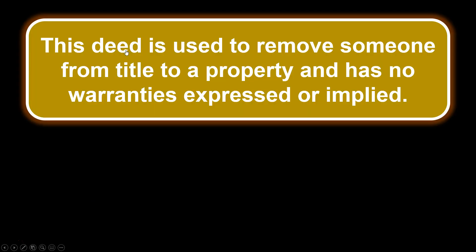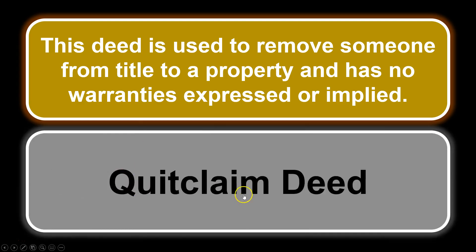Deeds. This deed is used to remove someone from title to a property and has no warranties expressed or implied. A deed used to remove someone from title with no warranties — that should be our first clue. The one that comes to mind is quit claim. Quit claim — I like to say it's quitting the claim of someone, removing them from title. So quit claim deed.